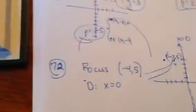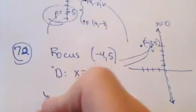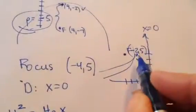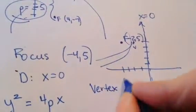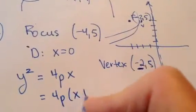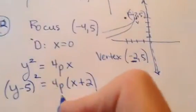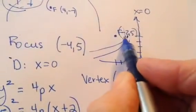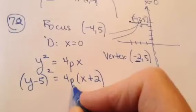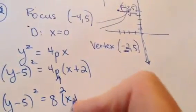Actually this is number 72. Since it opens to the left, I know I've got y squared equals 4px. That's if it's at (0, 0), but my vertex is (negative 2, 5). So my x value is negative 2, making this (x plus 2). My y value is 5, so this becomes (y minus 5). The distance p is 2 — you can count over and see that. So stick a 2 in: 4 times 2 is 8. My final equation is (y minus 5) squared equals 8(x plus 2).